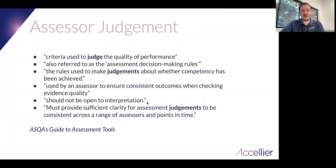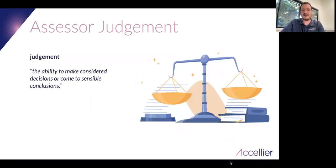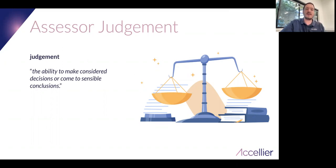I've seen 'judgment' appear in audit reports too — 'the assessment tools were insufficient for assessors to make judgments about whether competency has been achieved.' So what does judgment actually mean? The dictionary definition: 'the ability to make considered decisions or come to sensible conclusions.' So we're creating checklists and instruments that give assessors the ability to make considered decisions and come to sensible conclusions. Our criteria must allow that to happen.